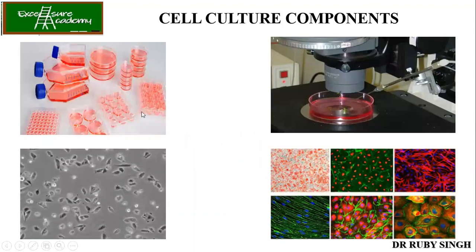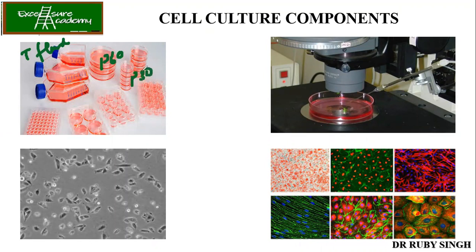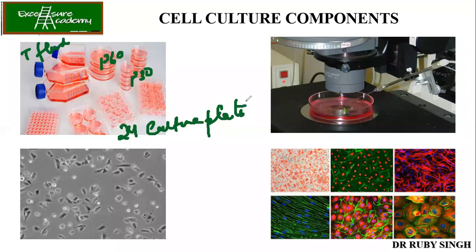This is how the culture vessels look. You can see these are called T-flasks, and these are your P60 and P30 petri dishes. These are 24-well culture plates and this is your 96-well titer plate.